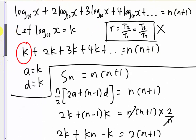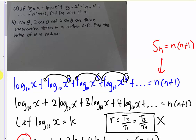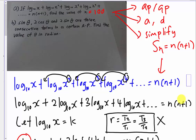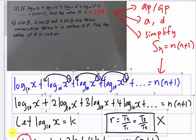It's not really difficult if you understand the question. So X equals 100. The key steps for Part A are: first, simplify the progression by substituting K for log₁₀X; second, determine whether it's arithmetic or geometric progression; third, find A and D; and finally apply the Sn formula. I hope you understand the approach. Now I'll erase everything and move on to Part B.